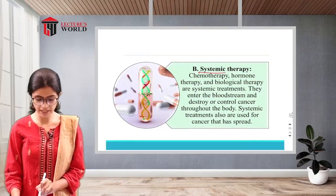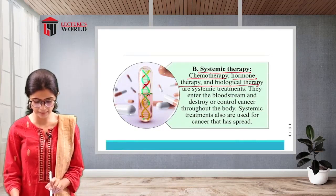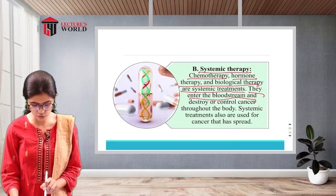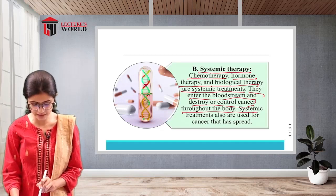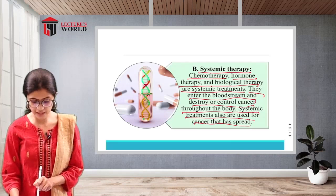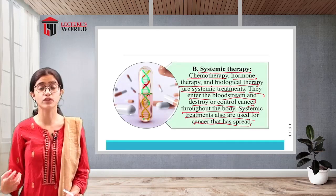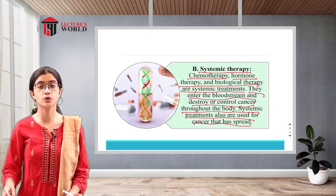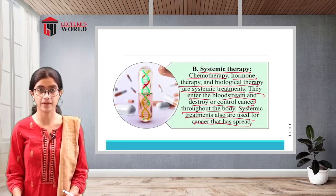Systemic therapy focuses on chemotherapy, hormone therapy, and biological therapy. These treatments enter the bloodstream and destroy or control cancer throughout the body. They are also used for cancer that has spread.